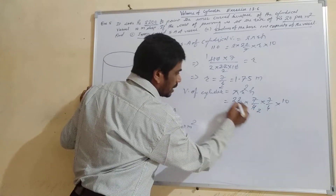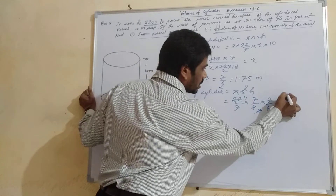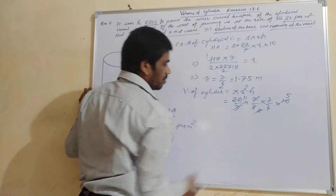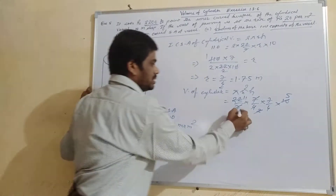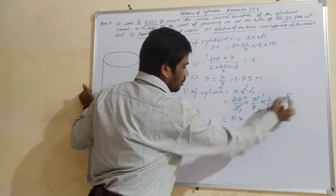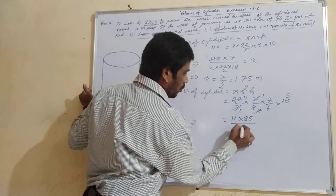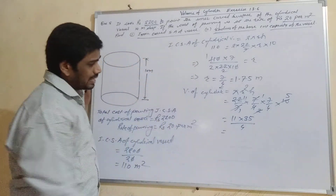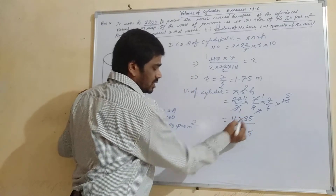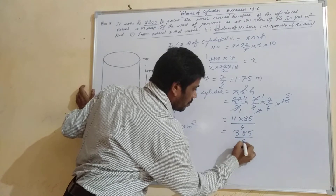Simplifying: the 2 in the denominator of 22/7 cancels with one factor; 22/2 = 11. The 7s also cancel out. We get 11 × 5 × 7 / 4 = 385/4 in the numerator. So the volume equals 385/4 cubic meters.